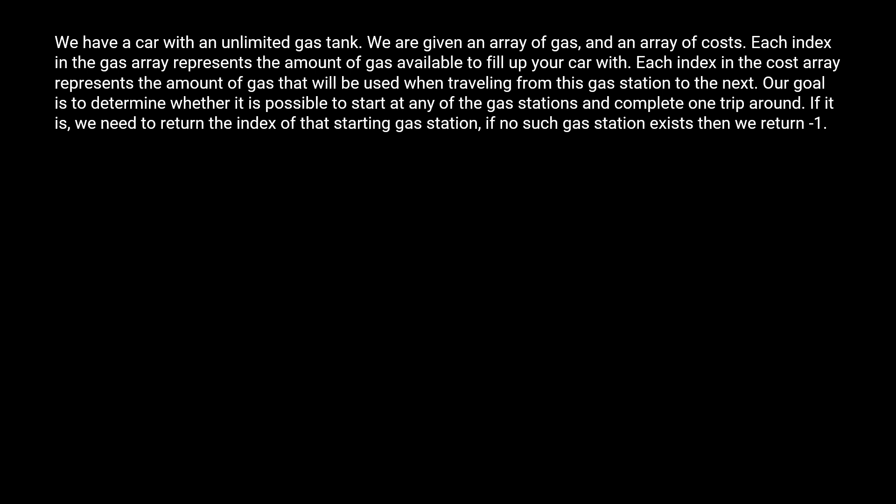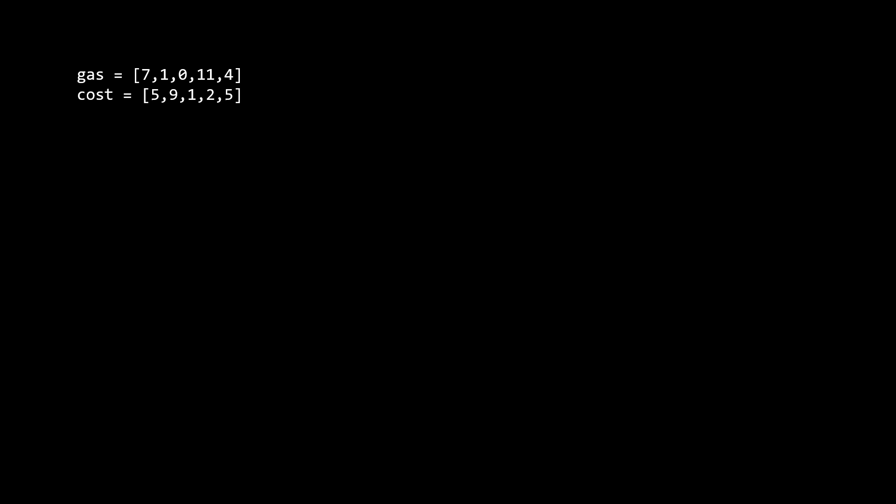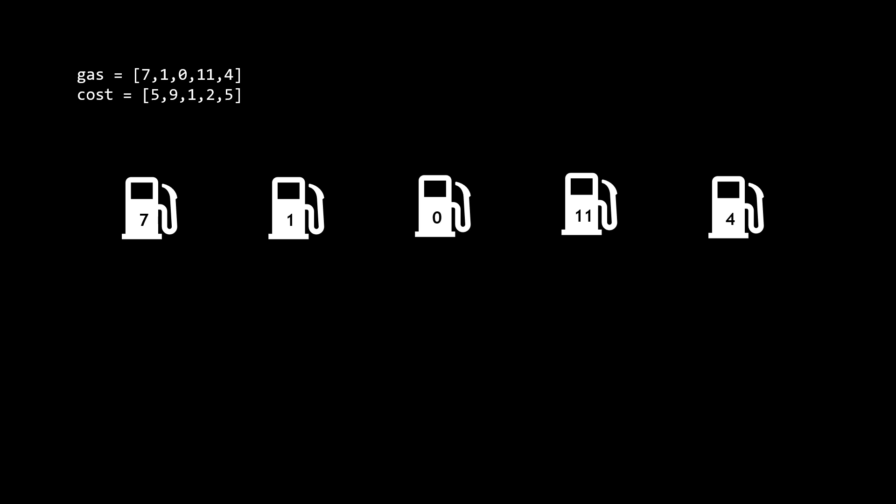The problem statement is a little bit complicated, so let's go over an example. Let's say we get this as our input for gas and cost. We can visualize the input like this. We have five gas stations, each with their respective gas values, which is the amount of gas they can give your car. Then, we have roads connecting them, which would have the corresponding amount of gas that will be used when your car is traveling. Our goal is to find whether we can start at any one of these gas stations and have enough gas throughout to make one round trip.